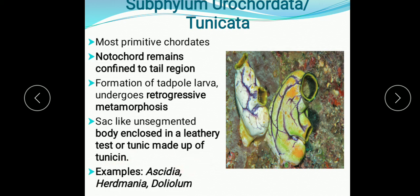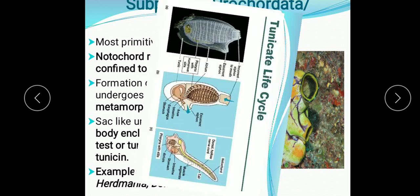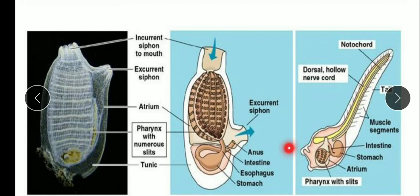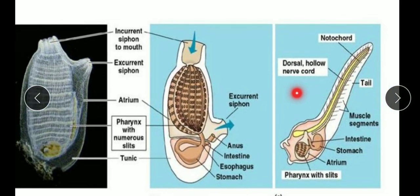Examples are Ascidia, Herdmania, and Doliolum. This is the diagram of Herdmania — you can see the atrial aperture, branchial aperture, and the tunic which is made up of tunicin. In the larval stage you can see the notochord, dorsal hollow nerve cord, and pharyngeal gill slits — all three defining features of the chordates.